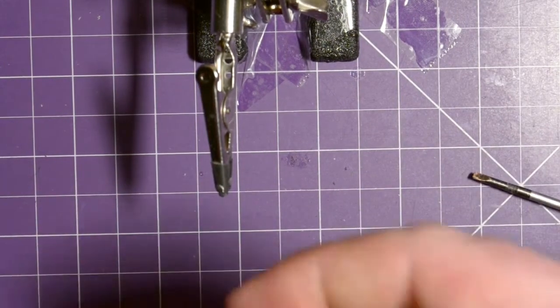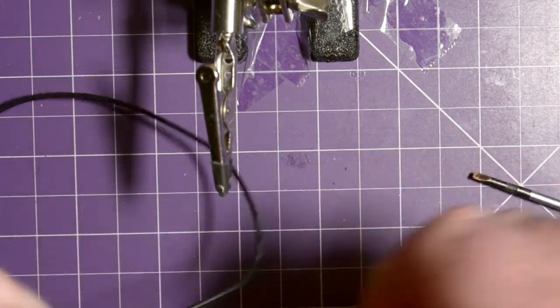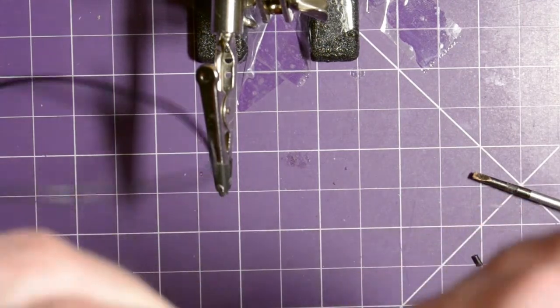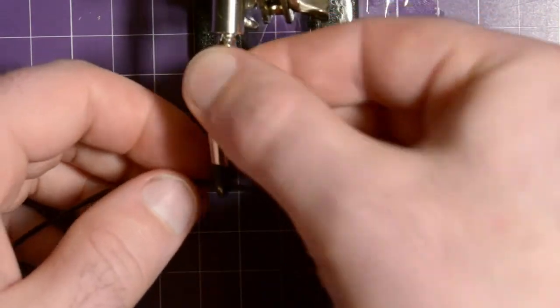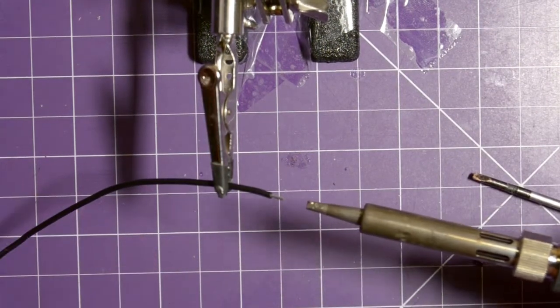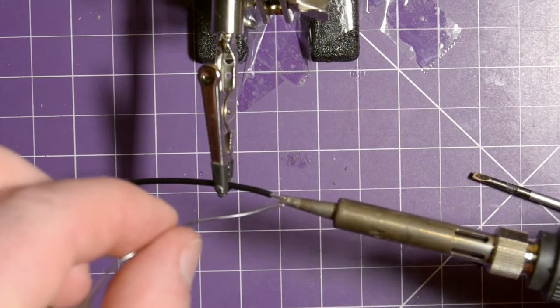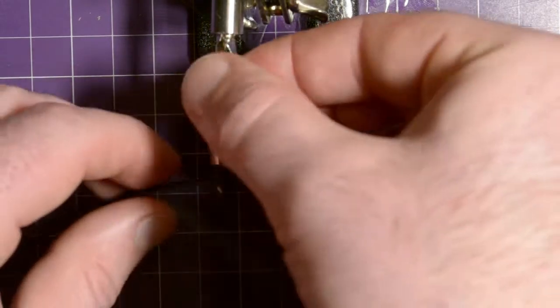Now for the other end. We're going to strip a little bit away again. Not too much on this side. Just really short. We're going to pre-tin this end as well. We have our iron already hot. I moved down the iron to 350 degrees. We don't need that much heat on this end. So let's pre-tin.